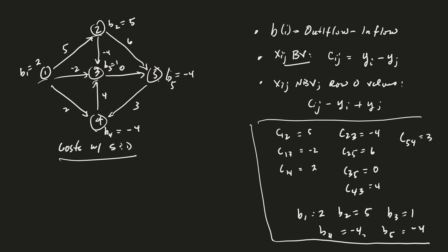And we have B1 is equal to 2, B2 is 5, B3 is 1, B4 is negative 4, and B5 is negative 4. And so before we get started, notice that this is a balanced problem, right? So the supplies are equal to the demands. I've got my B's written down here too to make it a little bit easier to see.